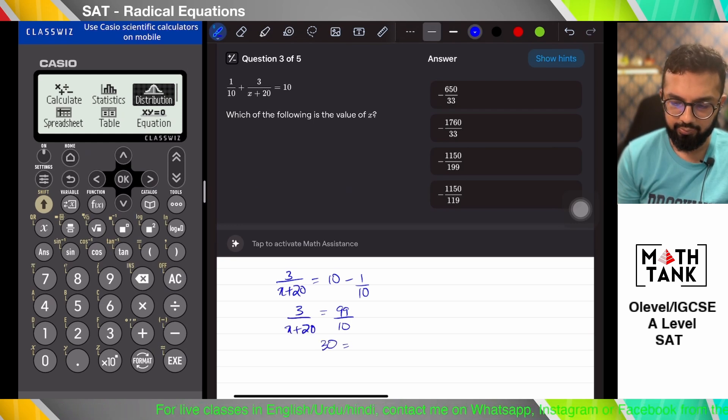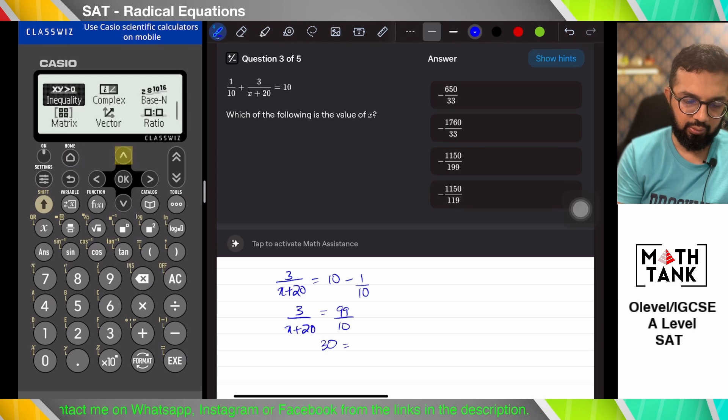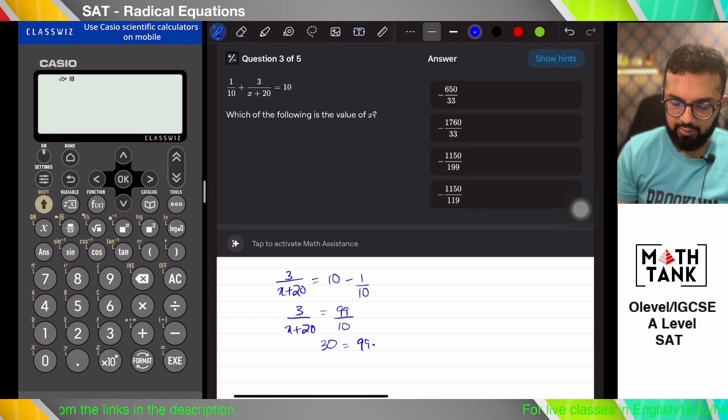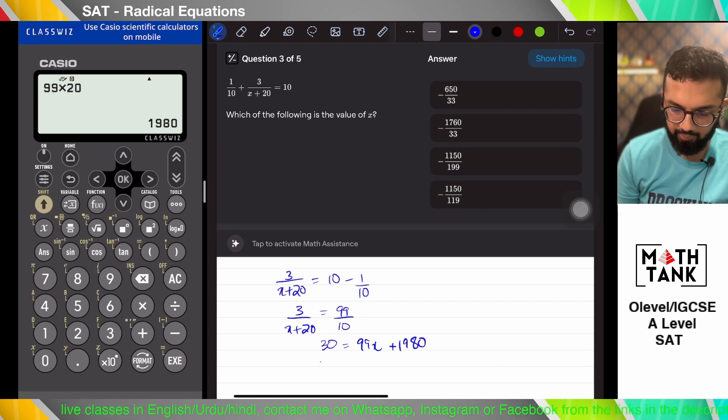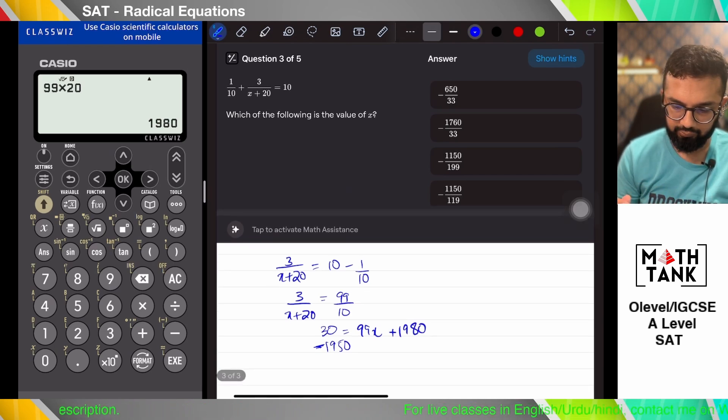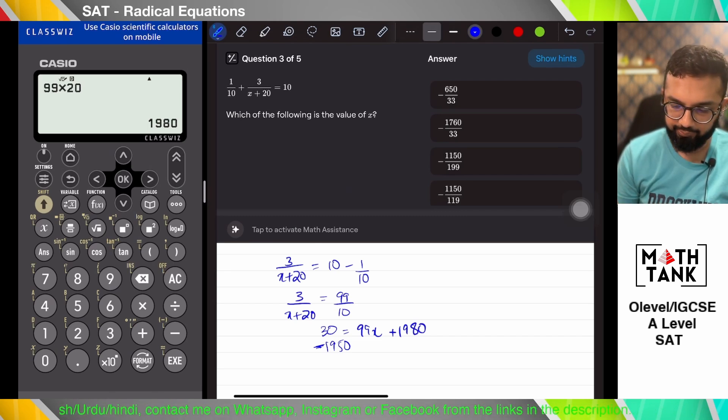So it's 30. Okay, 99x. It's 99 into 20. It's 1980. So minus 1950.